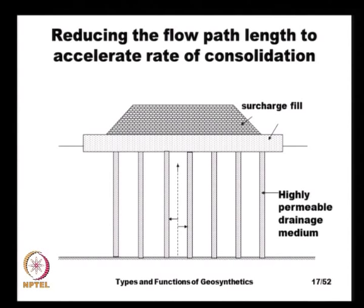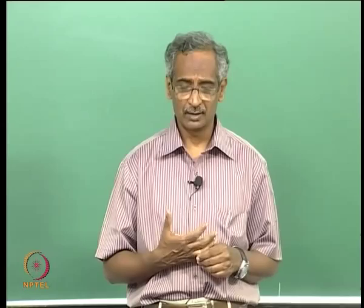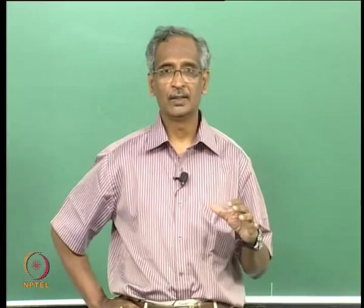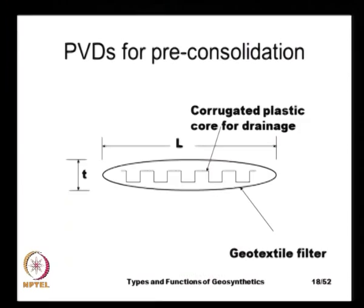In cross section, a prefabricated vertical drain consists of an outer geotextile core that acts as a filter, and an inner core that acts as the drainage medium. The inner core could be a simple corrugated plastic sheet, or in more complex systems, a geonet as core with a thick geotextile filter on the outside.